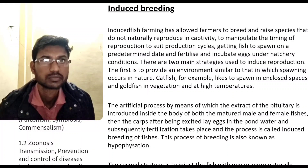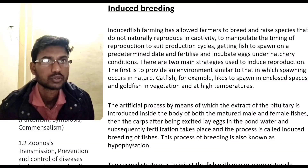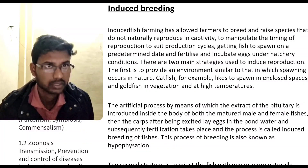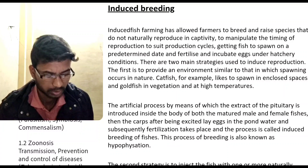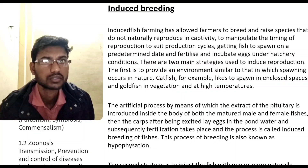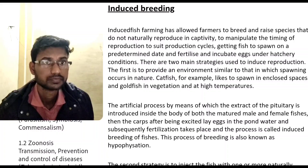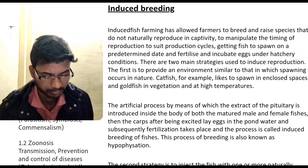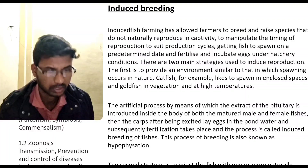Induced breeding. Induced fish farming has allowed farmers to breed and raise species that do not naturally reproduce. It provides the capacity to manipulate the timing of production, to shoot production cycles — getting fish to spawn on a predetermined date, fertilize, and incubate eggs under hatchery conditions.